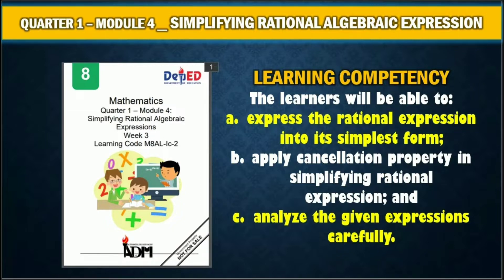And last, analyze the given expressions carefully. Like in simplifying or reducing fractions into lowest terms, simplifying rational expressions is said to be in simplest form if the numerator and the denominator are relatively prime, or it has no common factor except 1. So we can use the cancellation method since any number divided by itself is equal to 1.